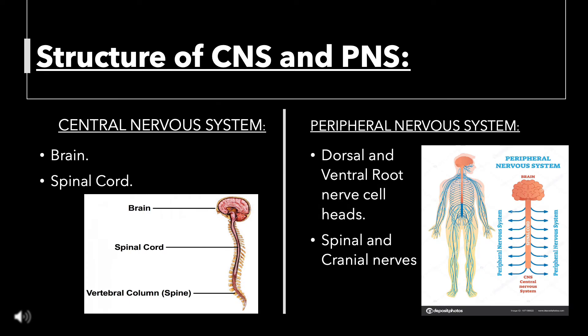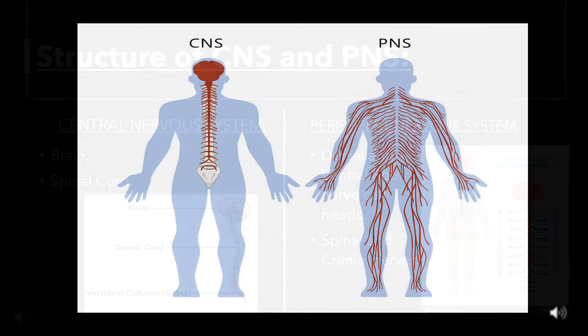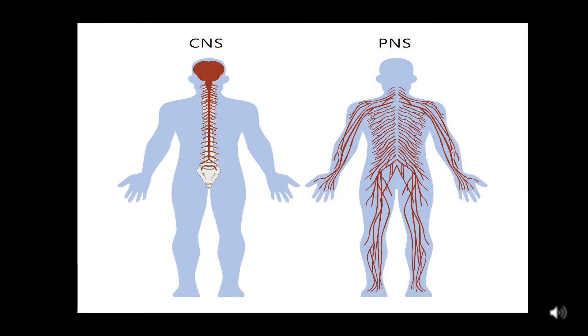Regarding the structure of CNS and PNS: CNS consists of Brain and Spinal Cord, and Peripheral Nervous System consists of Dorsal and Ventral Root Nerve Cell Heads, as well as Spinal and Cranial Nerves. This diagram shows the difference between CNS and PNS.